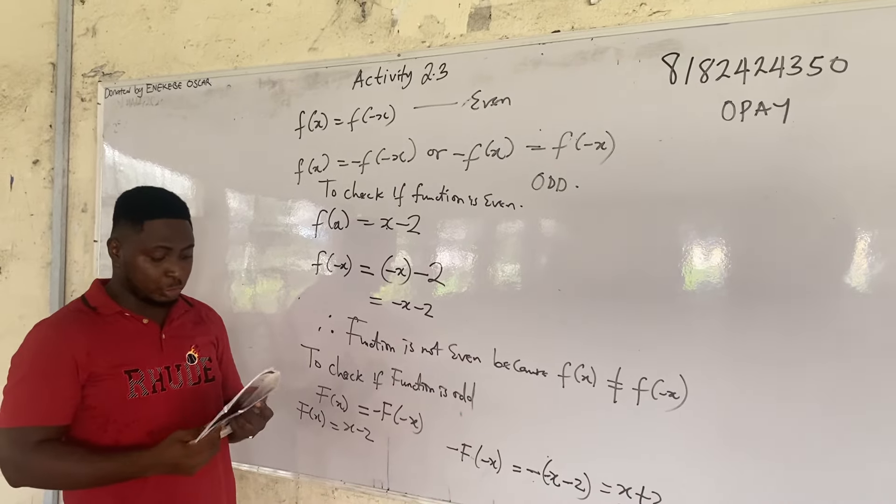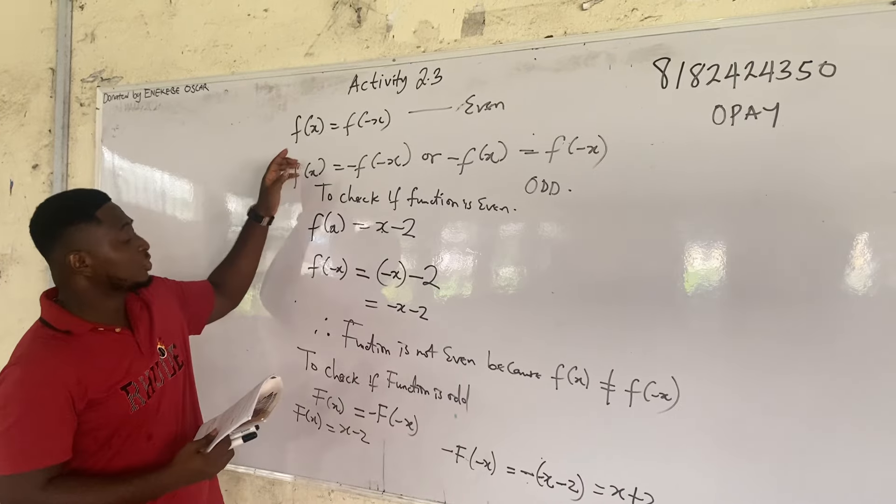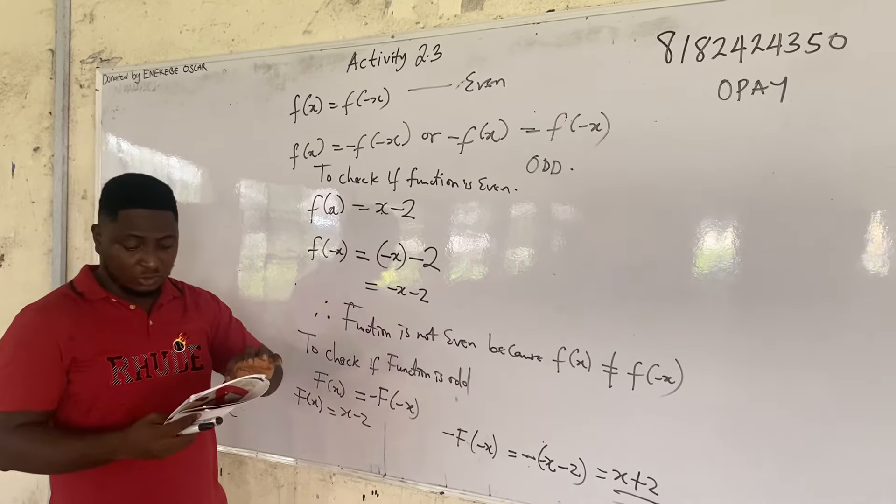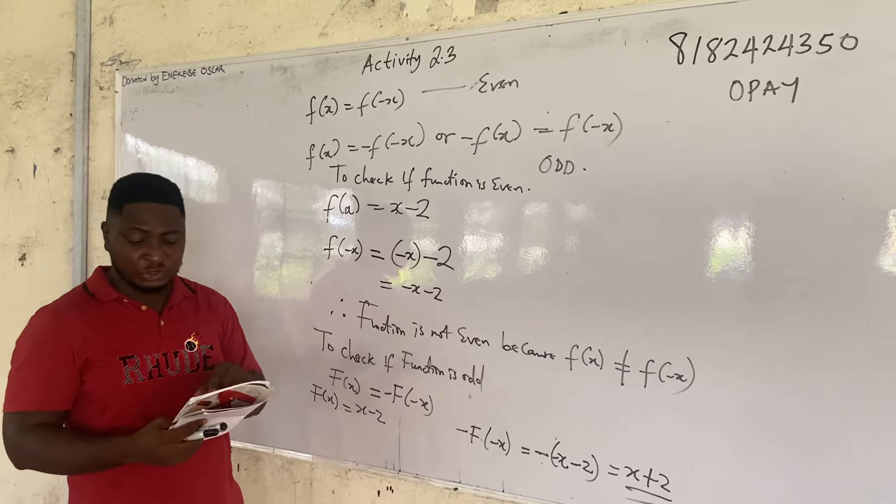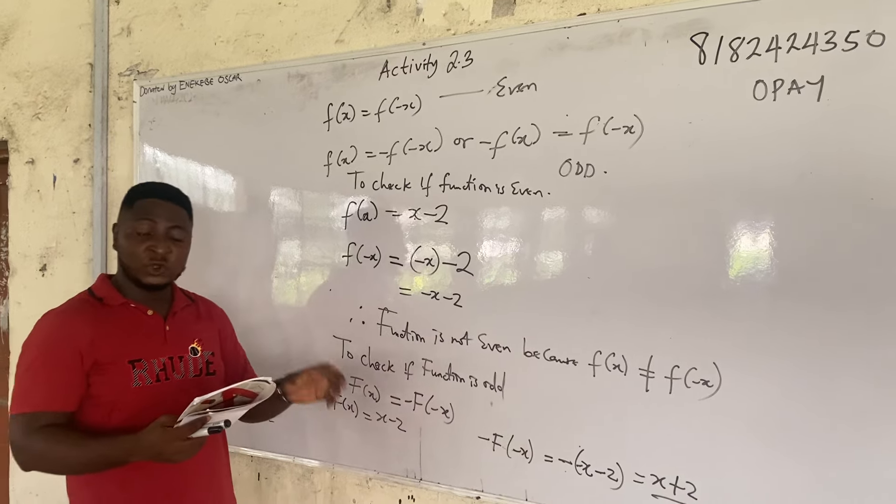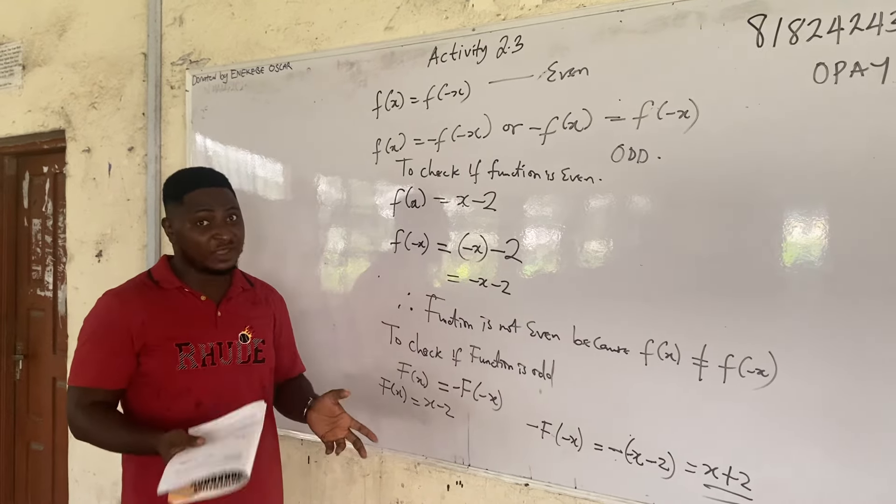Activity 2.3 asks us to show if this function x minus 2 is even or odd. It says show whether or not the function f of x equals y equals x minus 2 is an even function or an odd function or is neither of them.